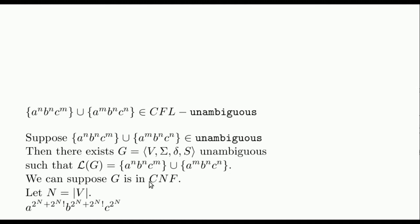As in the previous video, let N be the amount of variables in G and let's consider this word. We have 2^N + 2^N! a's, also this same amount of b's and finally 2^N c's. There are less c's than a's and b's, but the same amount of a's and b's, and thus the word is in the language.